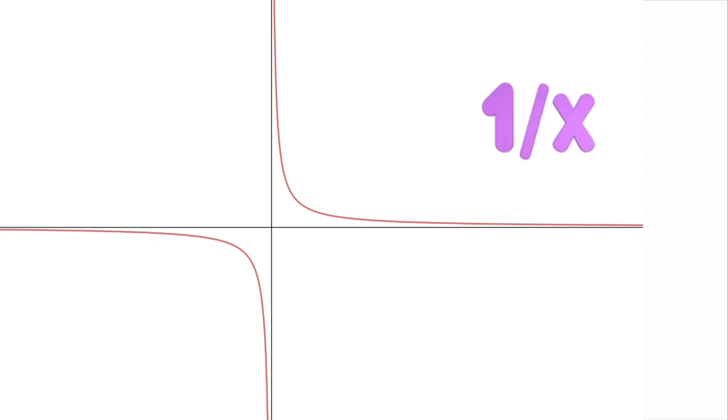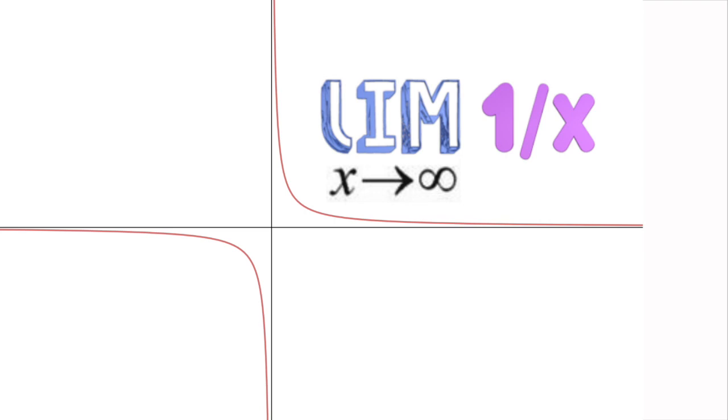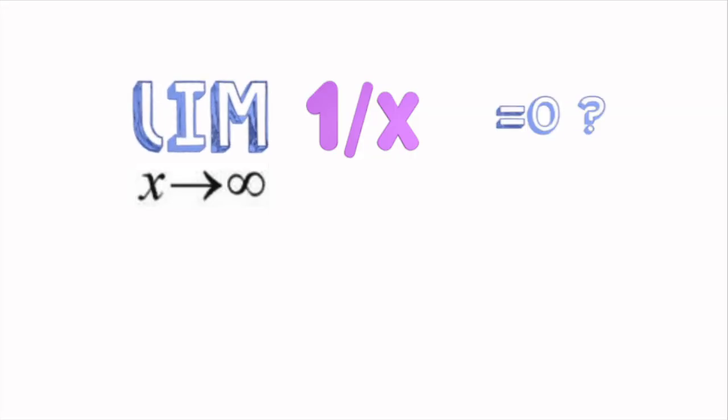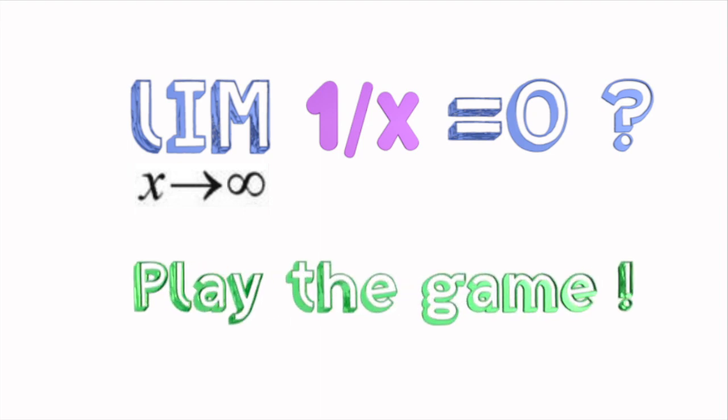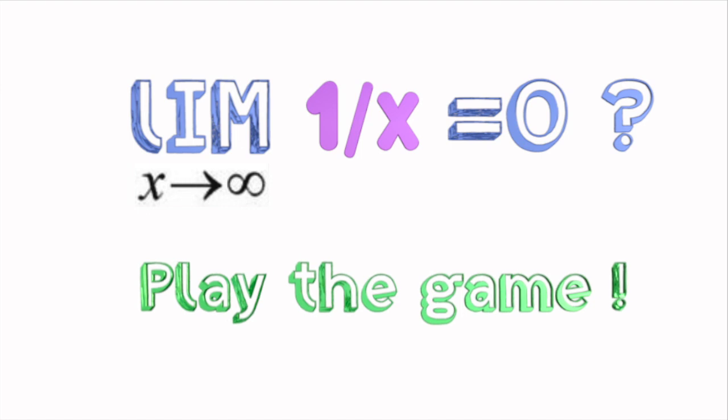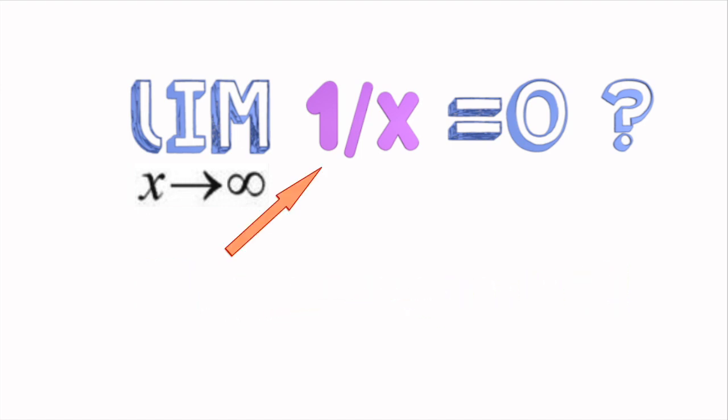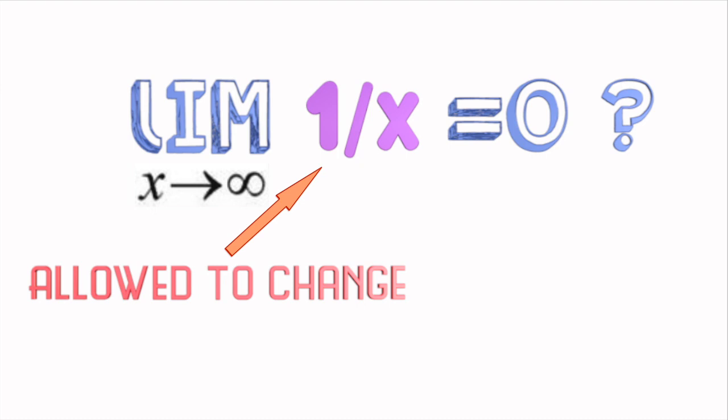So, as an example, we can take a function 1 over x and consider a limit as x goes to infinity. It is natural to conjecture that the answer should be 0. And the way to prove it is to play our game. The only difference is that 1 over x is a function, so it is allowed to change, and we just need to choose a sufficiently large value of x to satisfy the rules of the game.